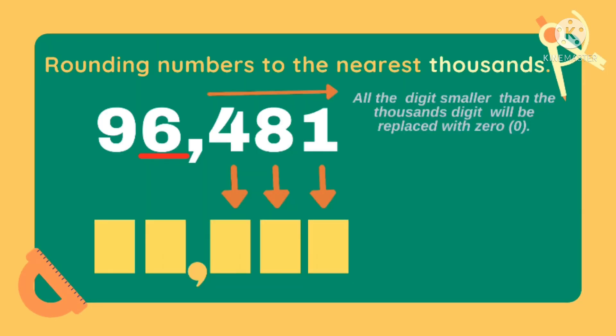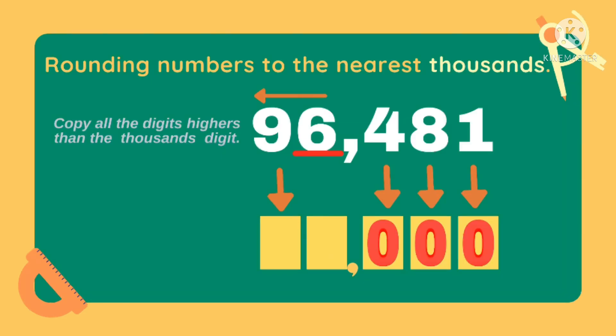Let's underline the number to show that 6 is the digit we need to round off. Then, all the digits smaller than the thousands digit will be replaced with 0. Those are the digits to the right of 6. So 4 will become 0, 8 will become 0, and 1 will become 0. Copy the digits to the left of the digit to be rounded. In this example, the digit to the left of 6 is 9. We will just copy 9.